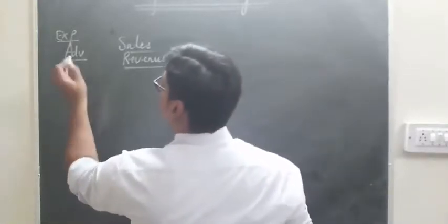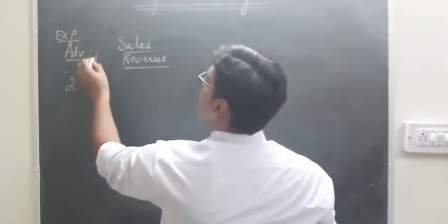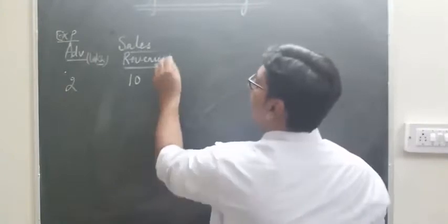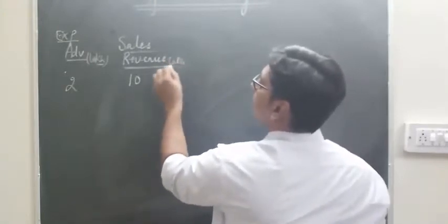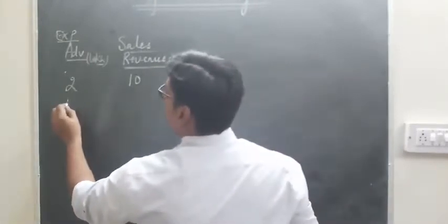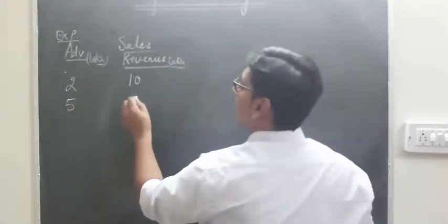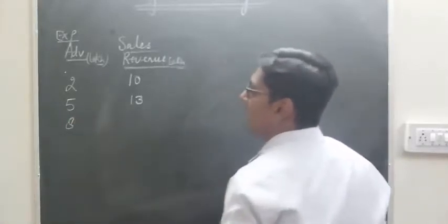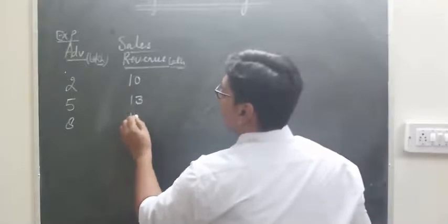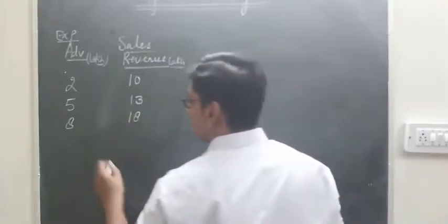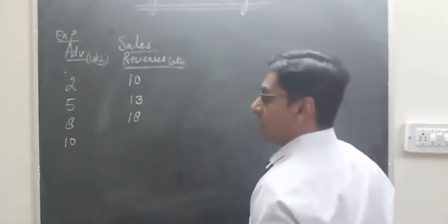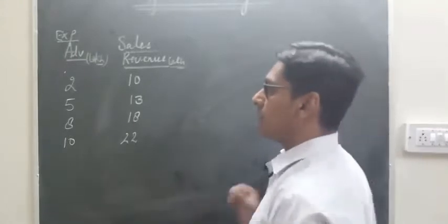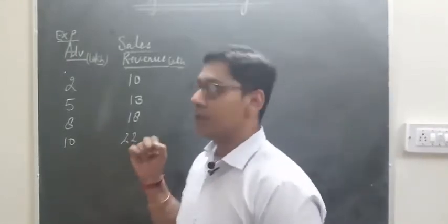For example: if I spend 2 lakhs on advertisement then 10 lakh sales is achieved; if I spend 5 lakhs then 13 lakhs sales is achieved; if I spend 8 lakhs then 18 lakhs sales is achieved; and if I spend 10 lakhs then 22 lakhs sales is achieved. These two data sets are related with each other.